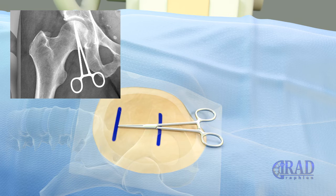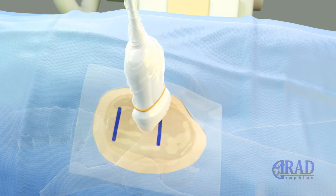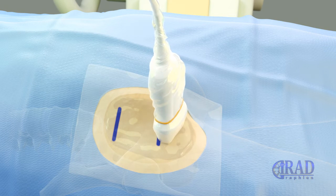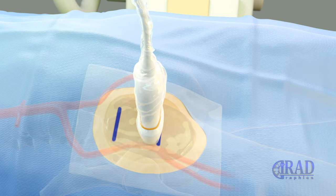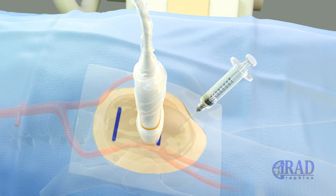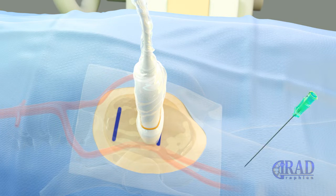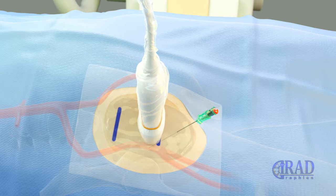Initially, the skin over the right groin is marked, delineating the upper and lower boundaries of the right femoral head. Under ultrasound guidance, the common femoral artery is located for access, and the skin entry site is anesthetized with lidocaine. Following this, the right common femoral artery is accessed using a micropuncture needle under ultrasound guidance.